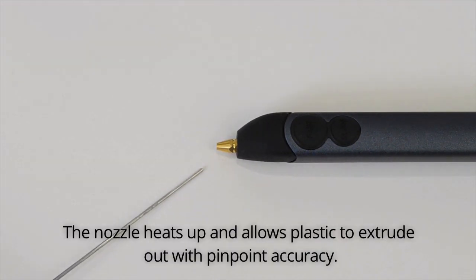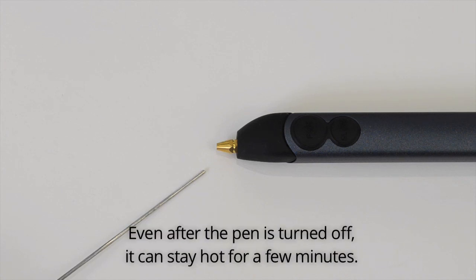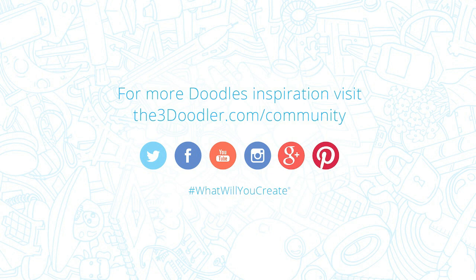Finally, the nozzle. The nozzle heats up and allows plastic to extrude out with pinpoint accuracy. The nozzle gets very hot. Do not touch it. Even after the pen is turned off, it can stay hot for a few minutes.